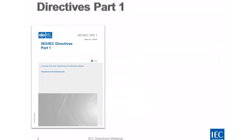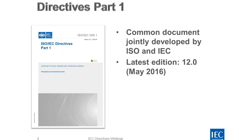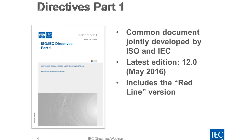Now let's focus on Directives Part 1. This document is in fact a common document jointly developed by ISO and IEC. The latest edition is Edition 12, published in May 2016. This edition, like previous editions, includes a redline version. This means the document — whether in PDF or paper form — has the plain directives in the first part, and the second part shows the exact same text with changes from Edition 11 to Edition 12 marked in red. So you have in fact two directives in the same document: the final version and one showing changes from the previous version.